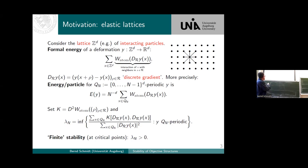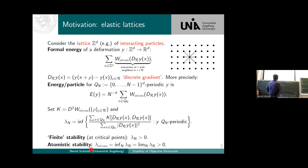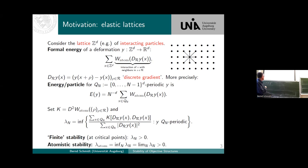I would call it stable for fixed and finite N — that's a finite stability criterion. But I would say atomistically stable if this is true for all N, if the infimum is bounded below by a positive number uniformly as N goes to infinity.